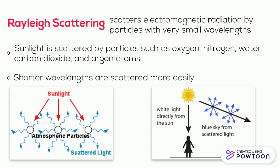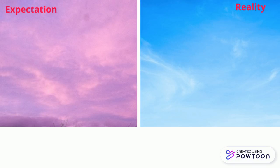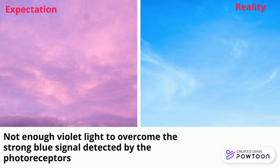Shorter wavelengths such as blue light are scattered more easily, which is why the sky appears blue. Since the shortest wavelength of visible light is violet, the sky should technically be violet. Although there is not enough violet light to overcome the strong blue signals detected by our blue photoreceptors.